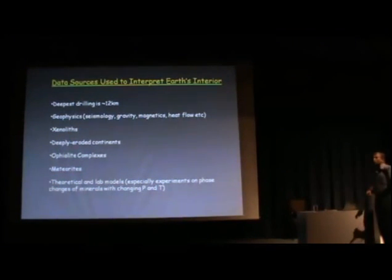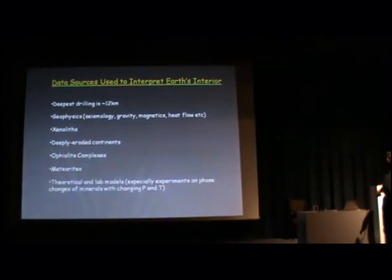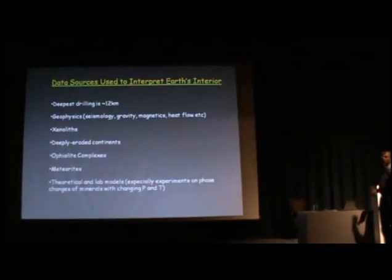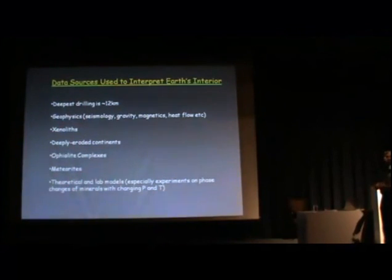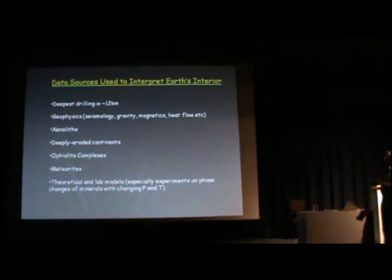Diamonds are formed at a depth of 150 kilometers and are brought to the surface. If something was caught up during diamond formation, that particular fragment was caught at a depth of more than 150 kilometers. Studying that fragment tells me what kind of material exists at a depth of 150 kilometers. Xenoliths are not gemstones - they are just pieces of rock present at a depth of 40, 100, or sometimes more kilometers. Those xenoliths are caught-up fragments of the interior.